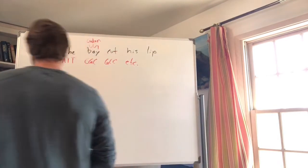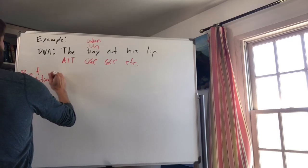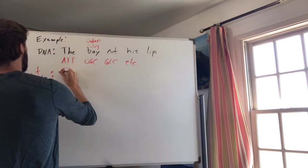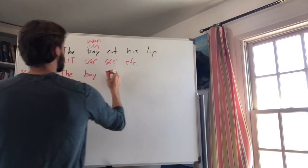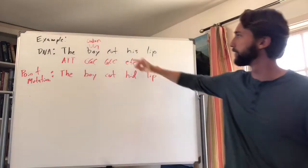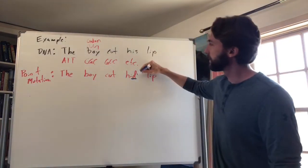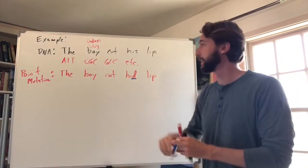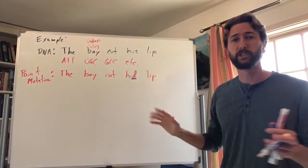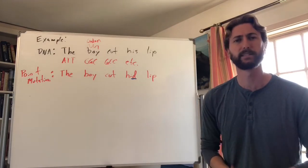For a point mutation example: the original sentence is 'the boy cut his lip.' After the point mutation it becomes 'the boy cut hid lip.' Only one letter changed — the S was substituted with a D. You can still kind of guess what it's trying to say. This may or may not cause a change in your phenotype — if the same amino acids are made and the same protein is made, nothing changes. Not a big change overall.